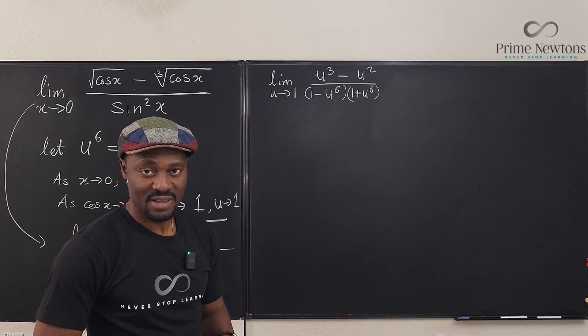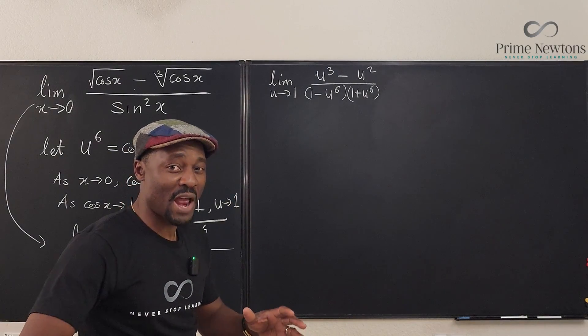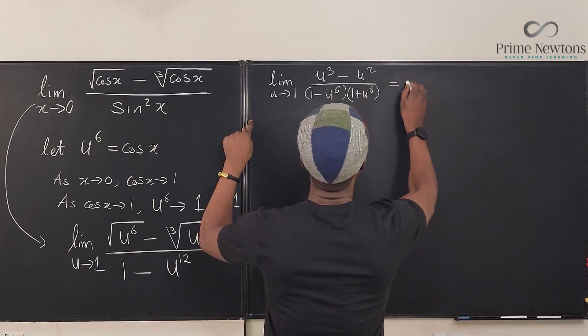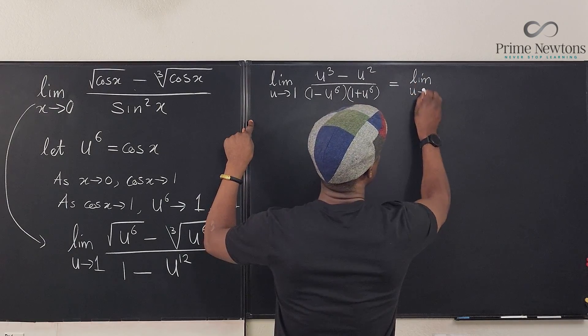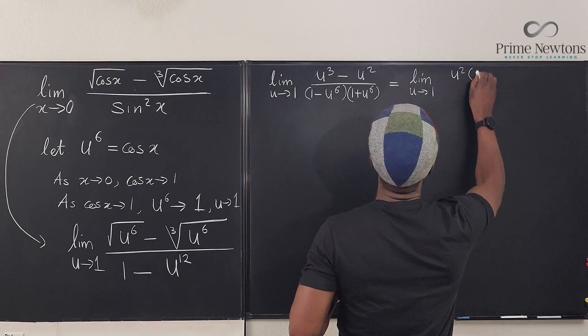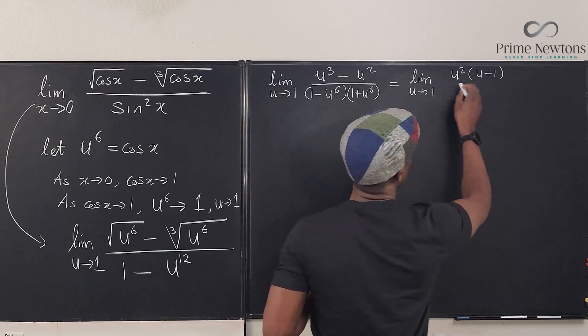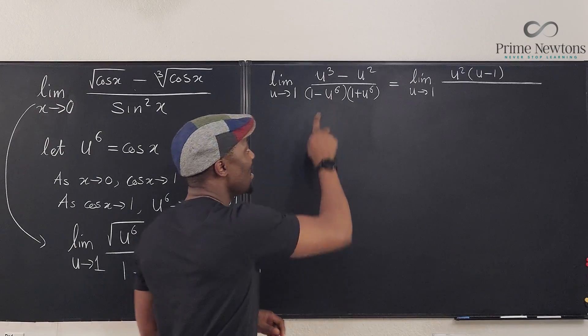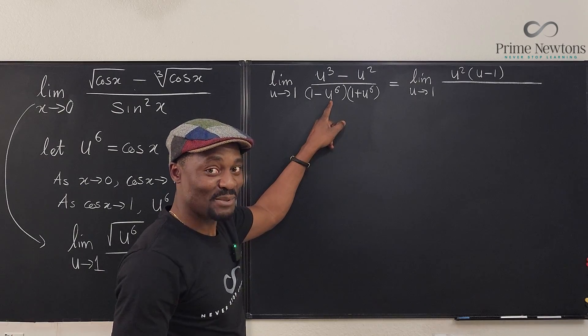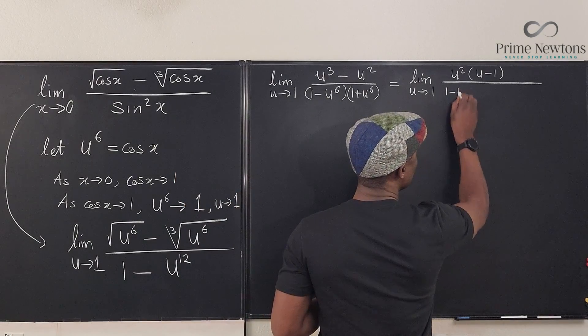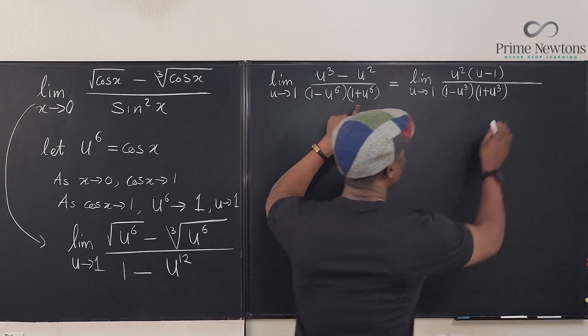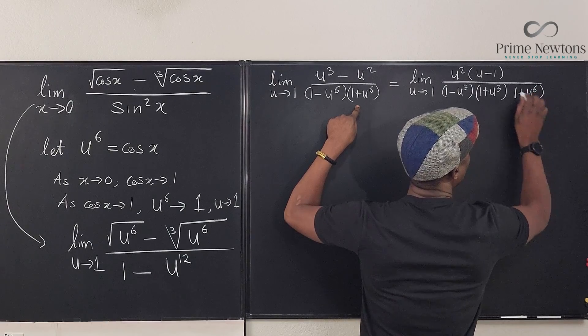Well, this doesn't help me. I'm going to do further simplification. I'll do it gradually. I could do it once, but I want to make it fun. So let's rewrite the next line. This is going to be the limit as u goes to one of, if I factor this out, I'm going to have u squared times u minus one. That's what you have here. But on the bottom, this is another difference of two squares, right? So I'm going to write this as one minus u cubed times one plus u cubed. So it's going to be one minus u cubed times one plus u cubed times one plus u to the sixth.